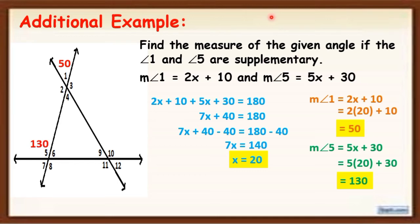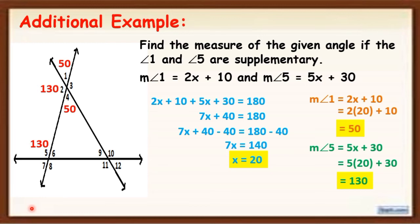Now we are going to find the measure of the other angles. Since angle 1 and angle 4 are vertical angles and vertical angles are congruent, the measure of angle 4 is also 50. Angle 2 and angle 4 are supplementary, so the measure of angle 2 is 130 — kasi ang supplementary, the measure is 180, so 50 + 130 = 180. Since angle 2 and angle 3 are vertical angles, they are congruent, so the measure of angle 3 is 130 degrees.